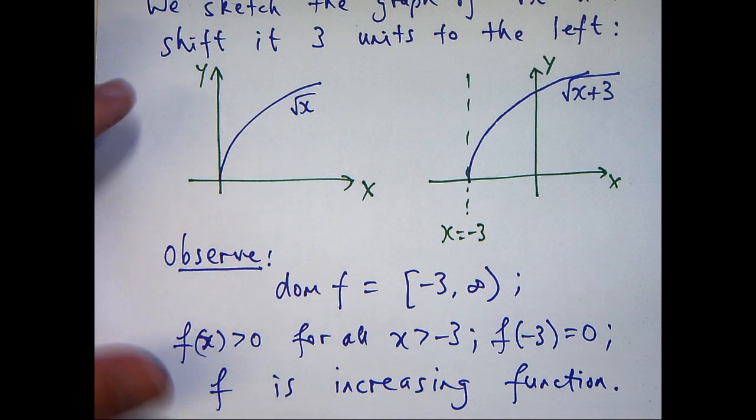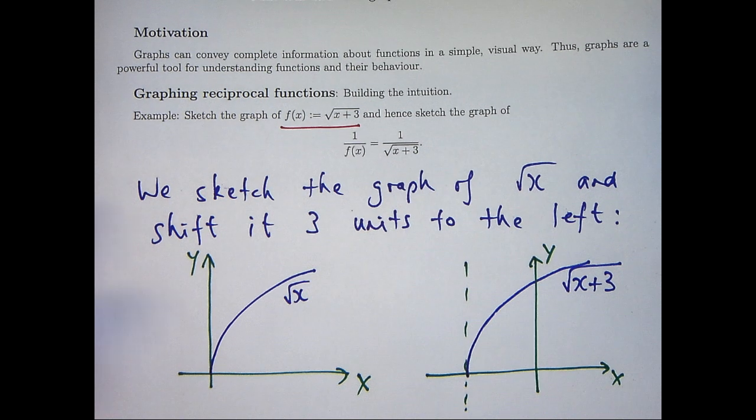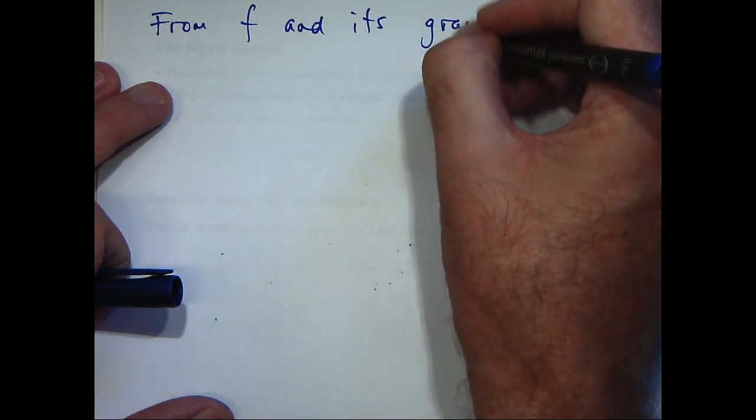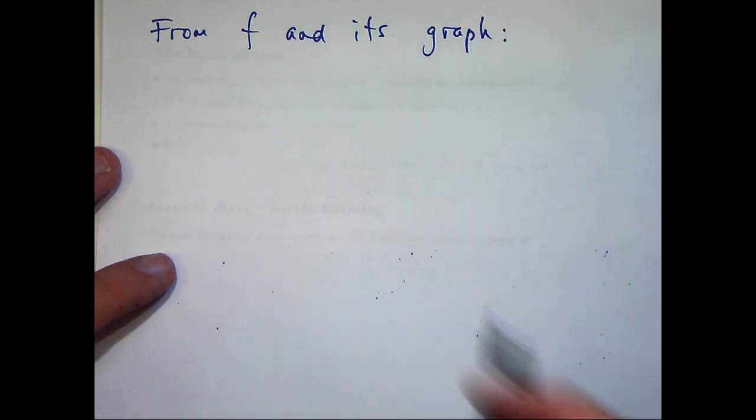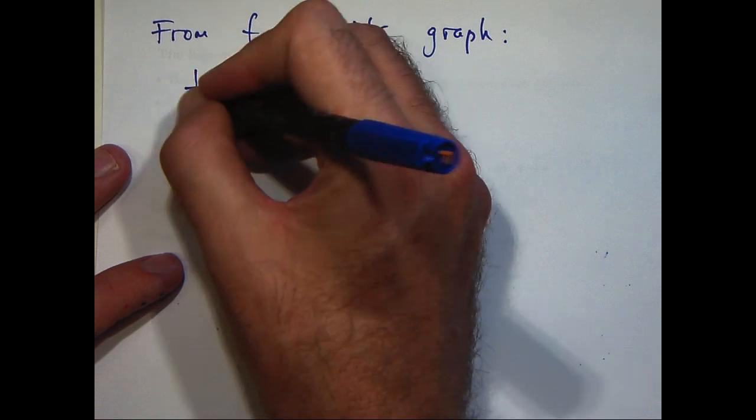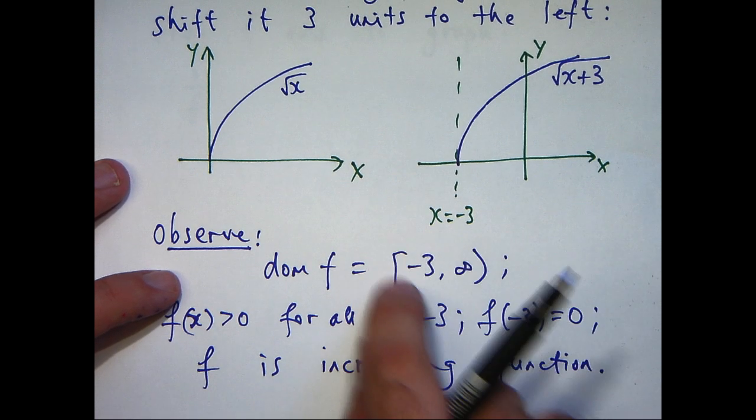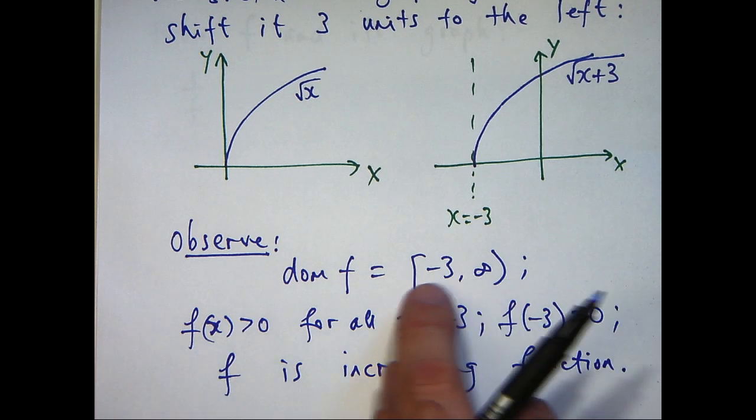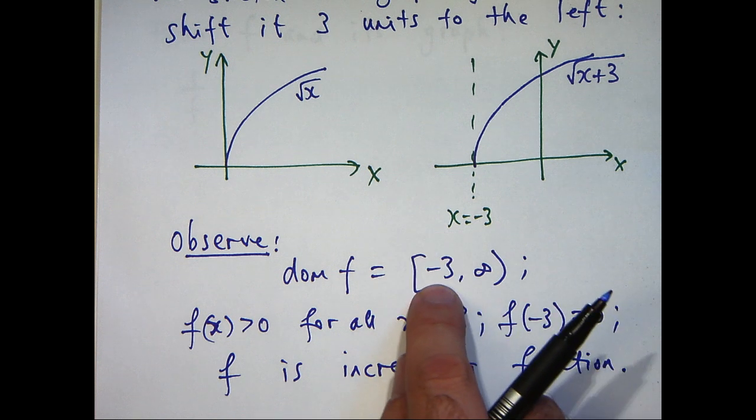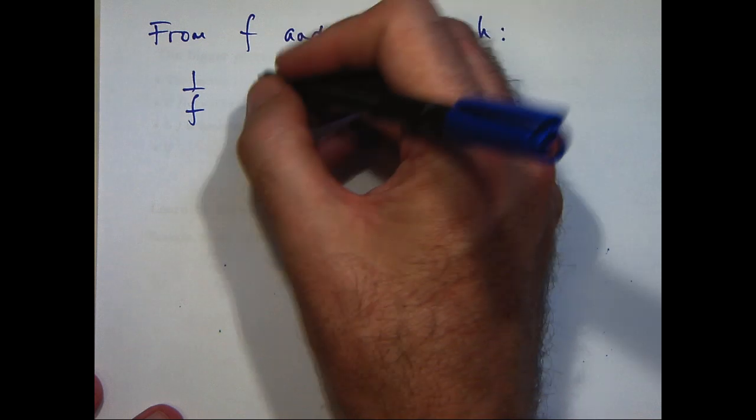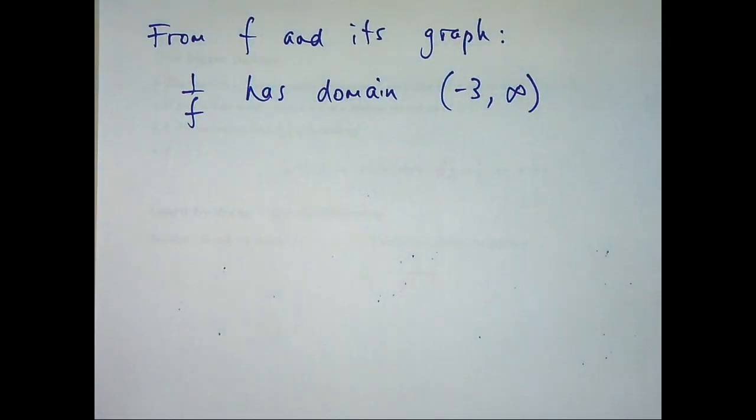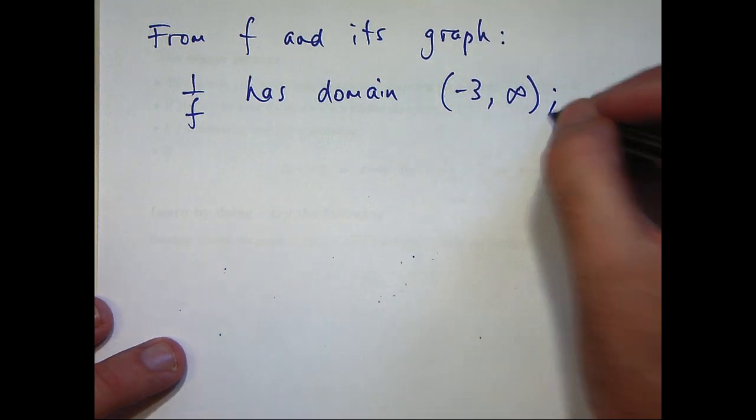Okay, let's use this information to sketch the graph of this reciprocal function. And we can do that in a number of ways. So from f and its graph, let's make some observations about what the graph of 1 on f would look like. Well, 1 on f will have almost the same domain. We do want to exclude the points, though, where we're dividing by 0. So f of x has a 0 at minus 3. So the domain of 1 on f will be this interval but with the point minus 3 removed. So we have an open interval here. So in other words, all those x points where x is strictly greater than minus 3.